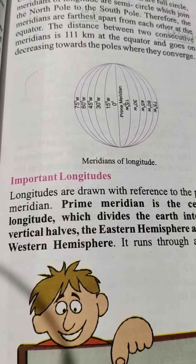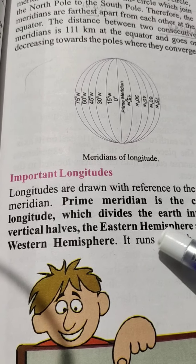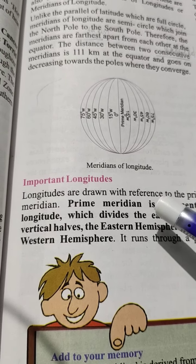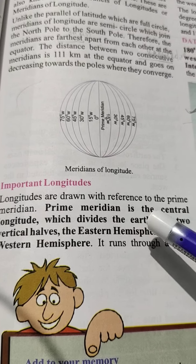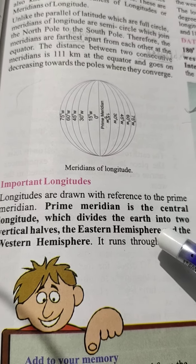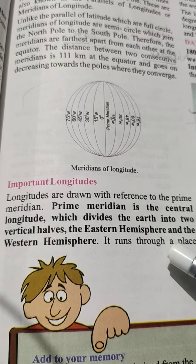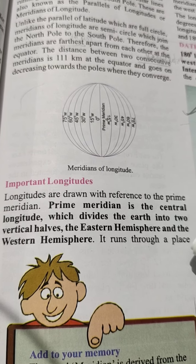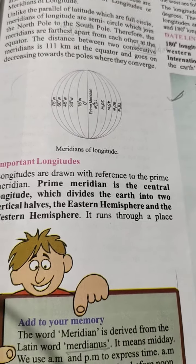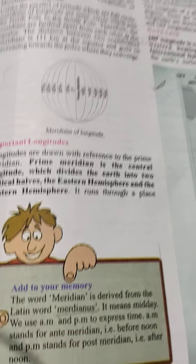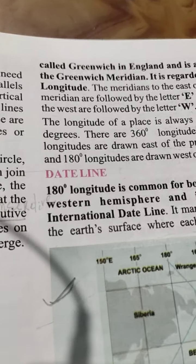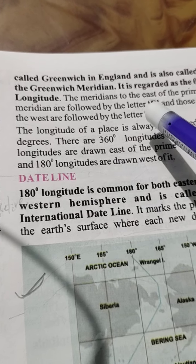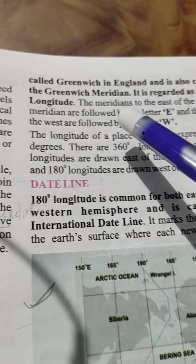Meridians of longitudes are drawn with reference to the prime meridian. The prime meridian is the central longitude which divides the earth into two vertical halves — the eastern hemisphere and the western hemisphere. It runs through a place called Greenwich in England and is also called the Greenwich meridian. It is regarded as the 0 degree longitude.